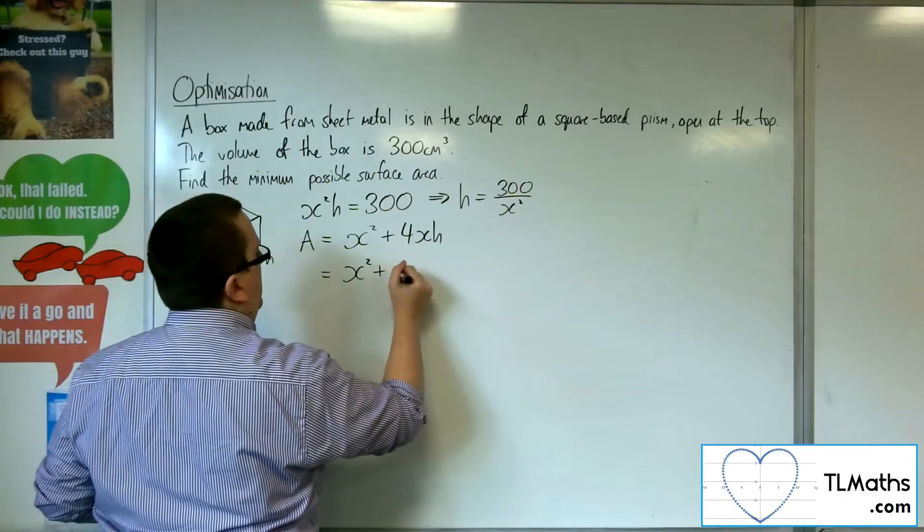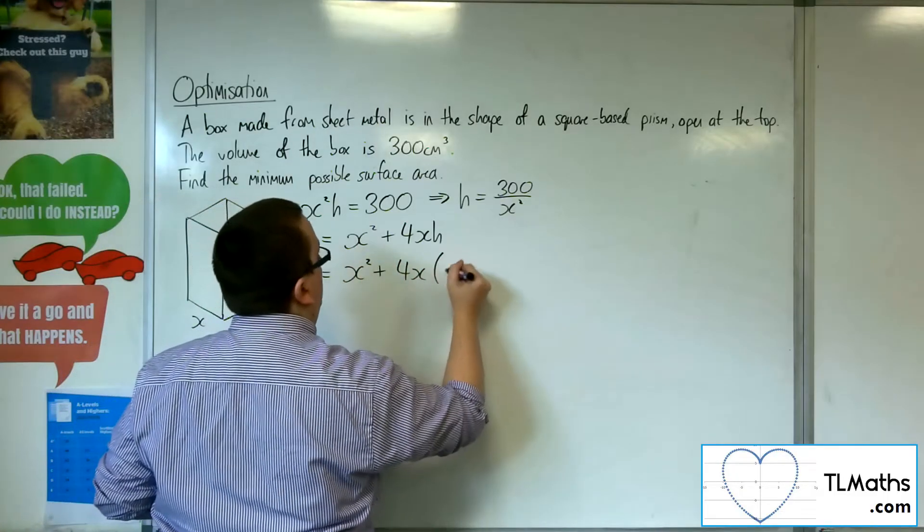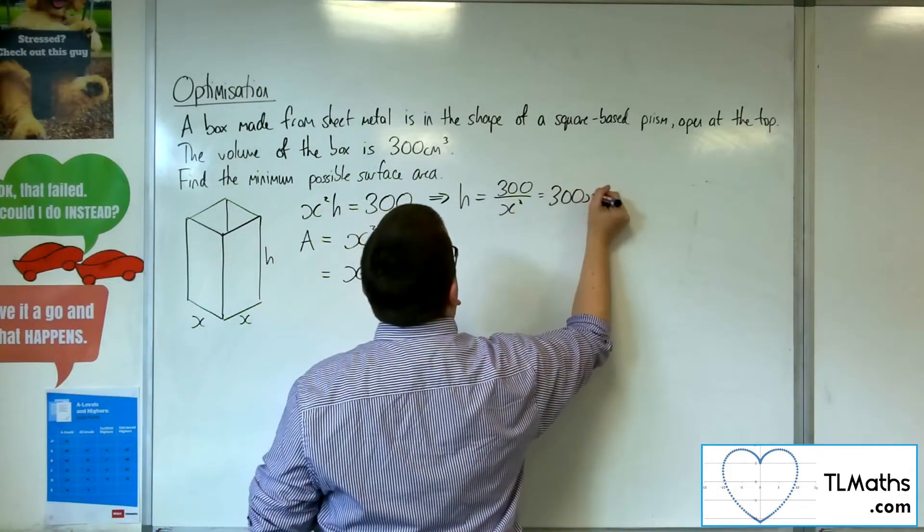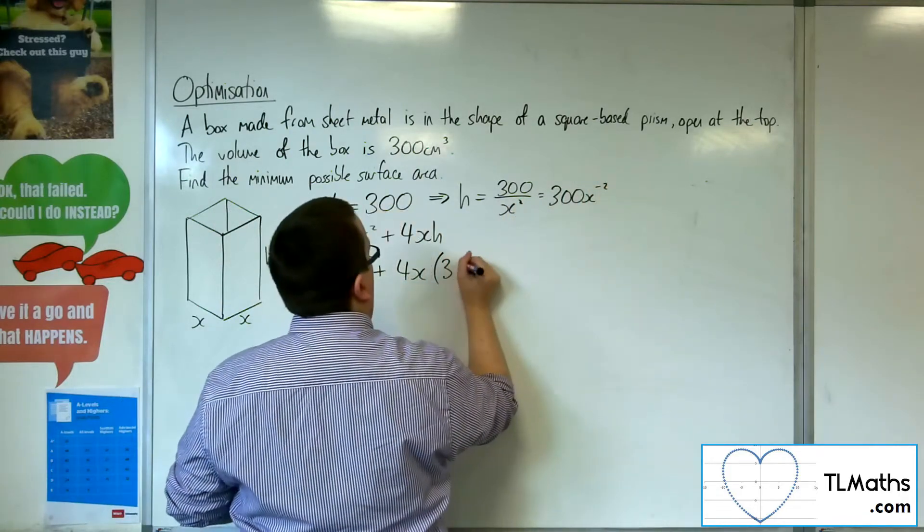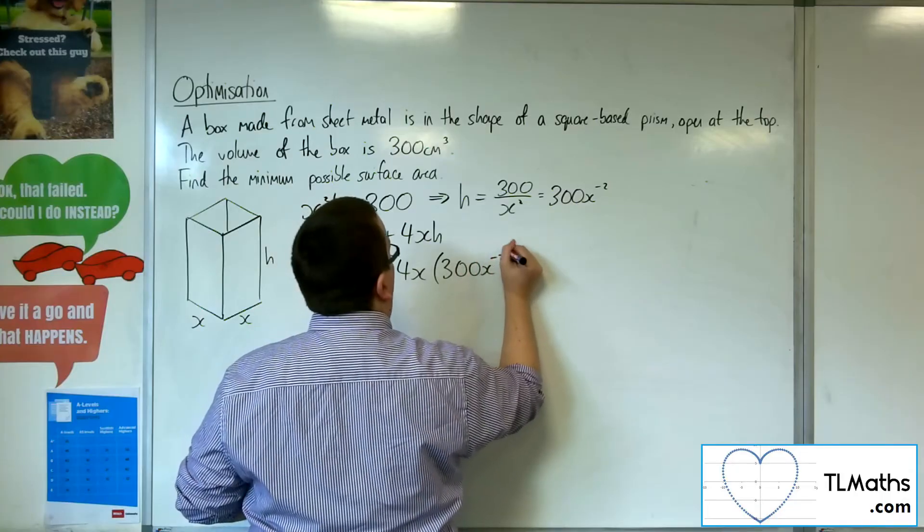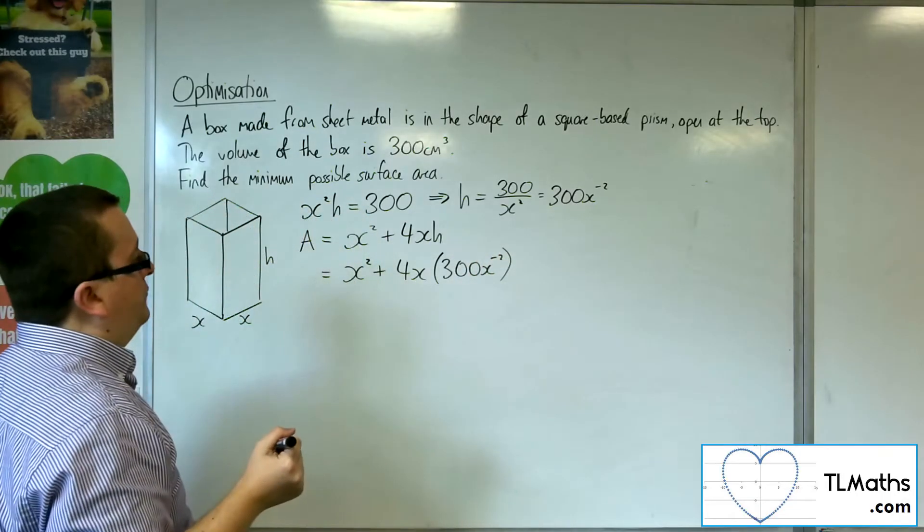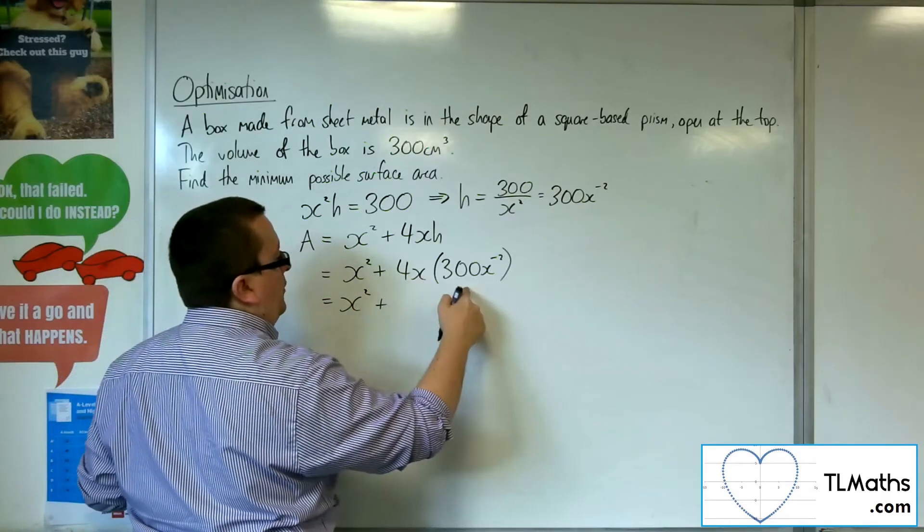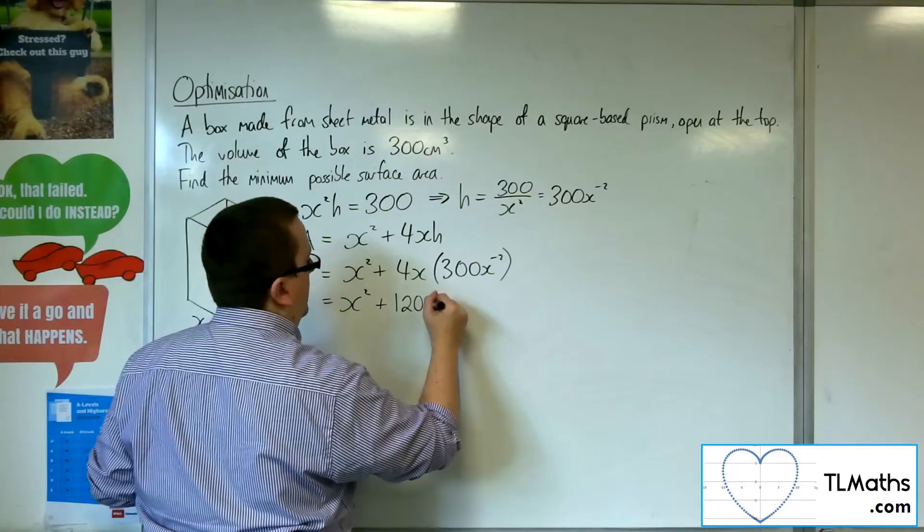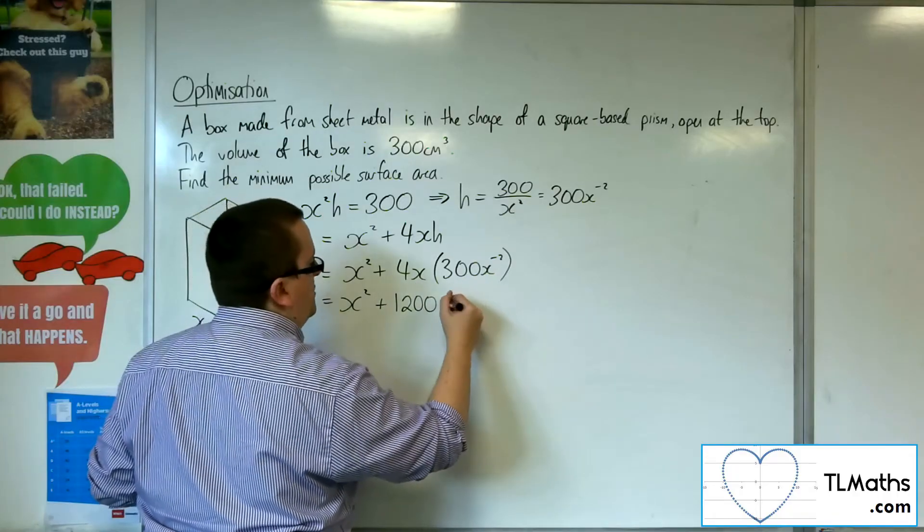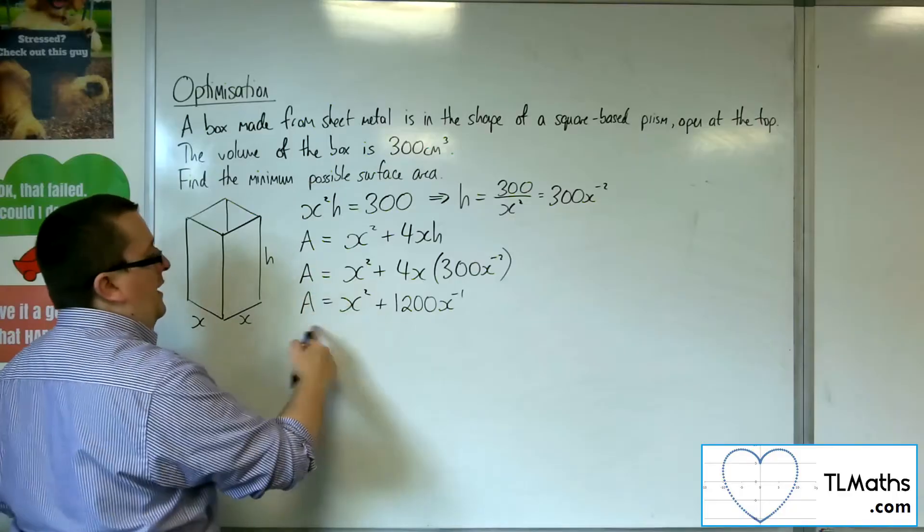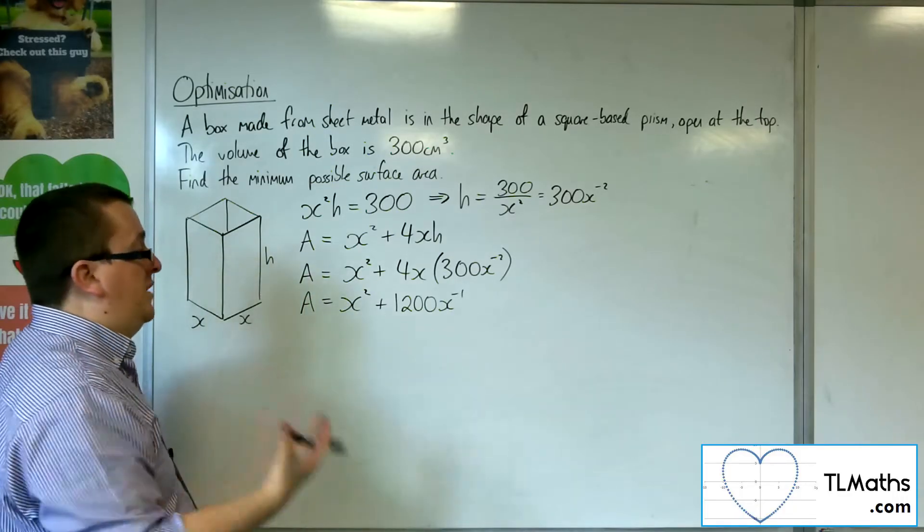So x squared plus 4x times—well, if I rewrite that as 300x to the minus 2, it might make it a little bit easier just to see what's going on. So I'm going to have x squared plus, well, 4 lots of 300 is 1200, and I've got x times x to the minus 2, so x to the minus 1. So that is the equation for my surface area.